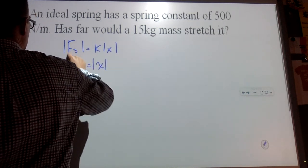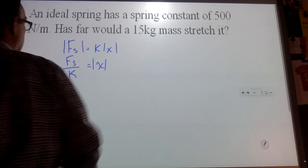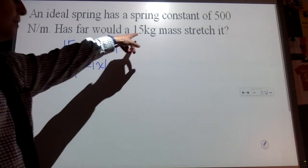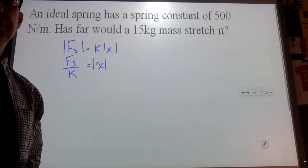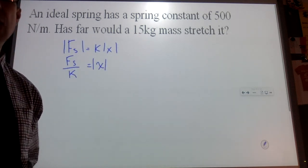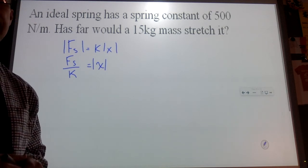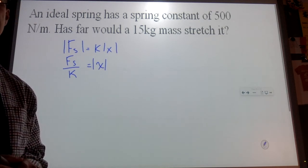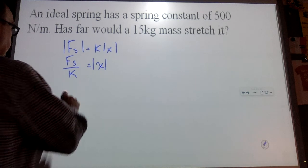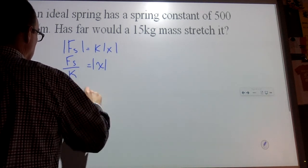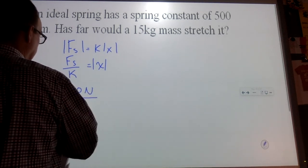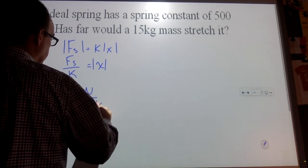So x is going to be equal to F_s over K. 15 kilograms is a mass. To make this a weight, I need to multiply it by g. So it would be 150 newtons divided by 500 newtons per meter.